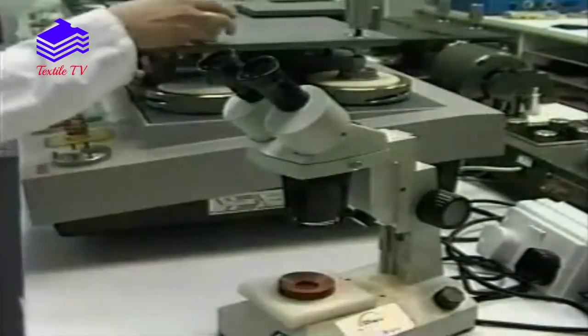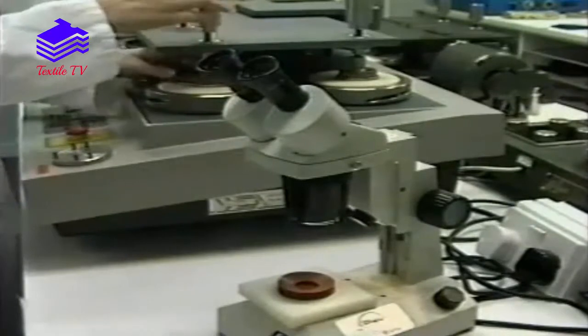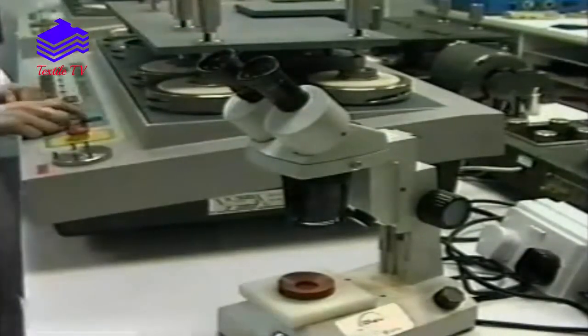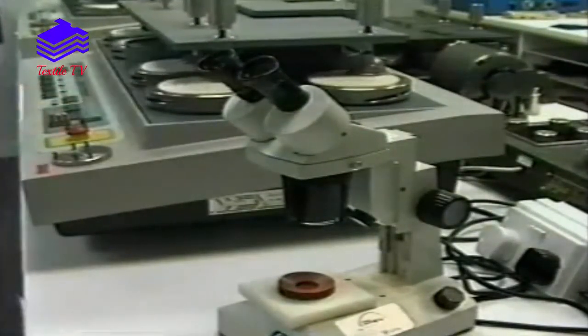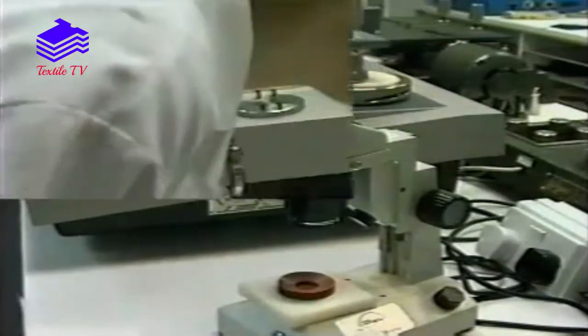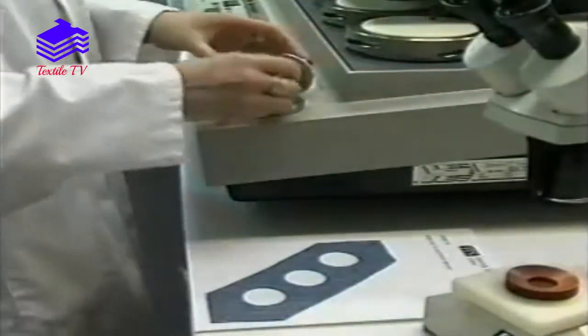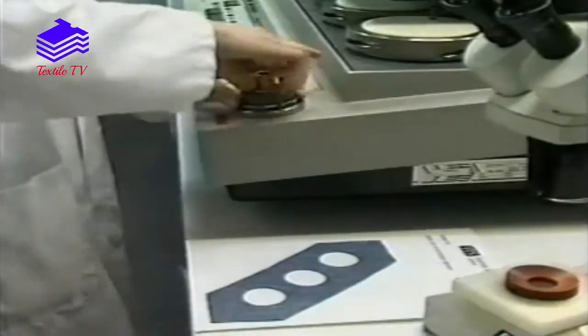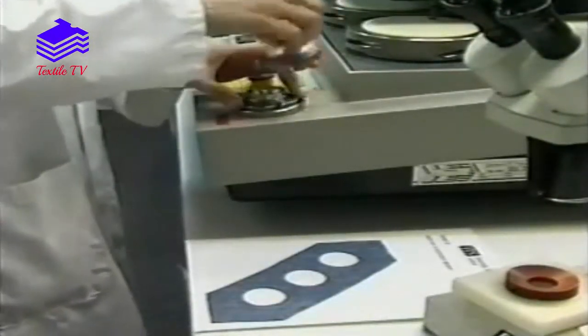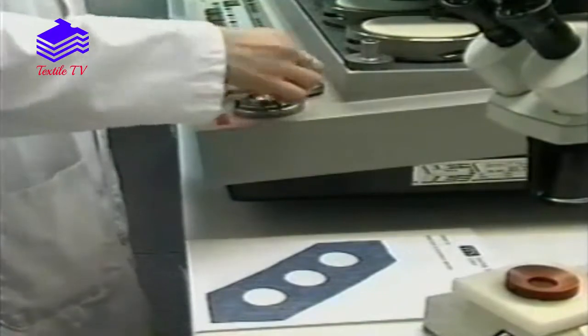If not, the holders are replaced on the tester and the machine run for a further number of revolutions. When the specimens have reached their end point, they are removed from the holder and mounted onto a test card to issue with the report.